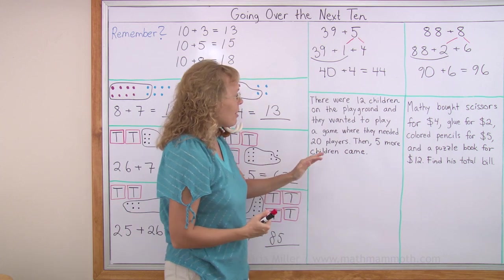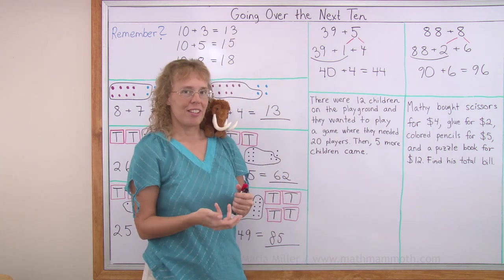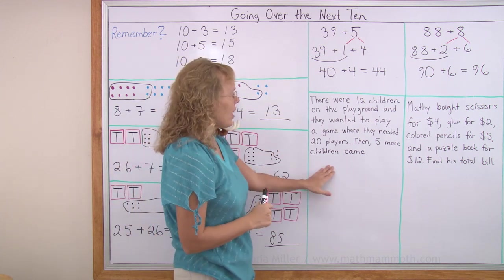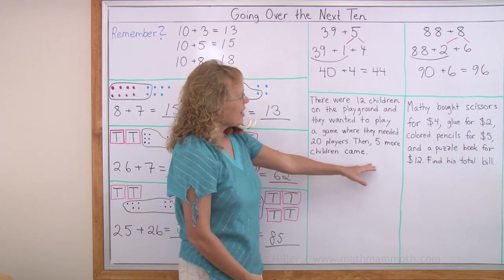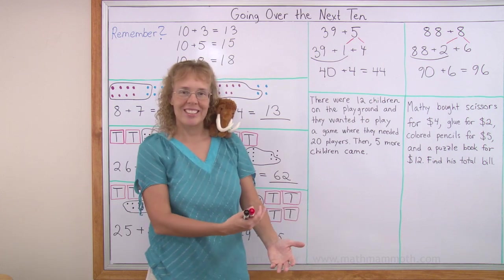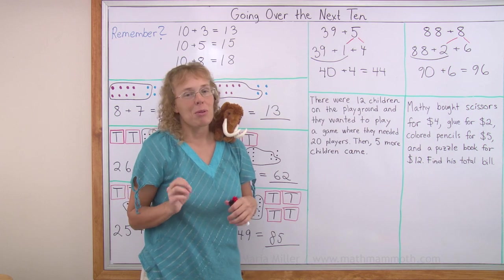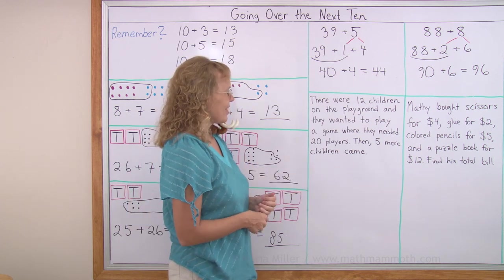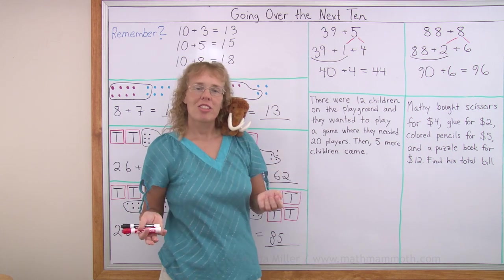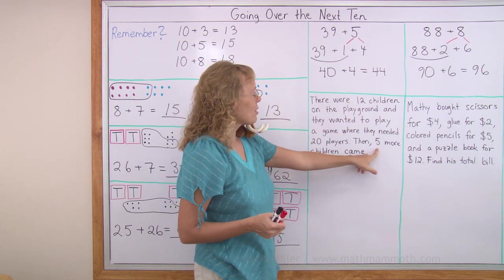There were 12 children on the playground. They wanted to play a game where they needed 20 players, some kind of maybe a ball game where there's 2 teams or something. And then 5 more children came. As you notice, the question is lacking. We don't have the question. What could we ask? Now you get to be the math bookmaker or the math word problem maker. What would you ask? Okay, one thing we could ask is how many children are there now?